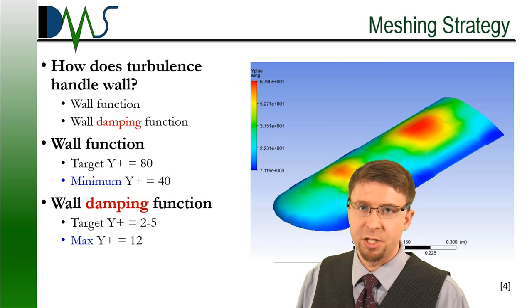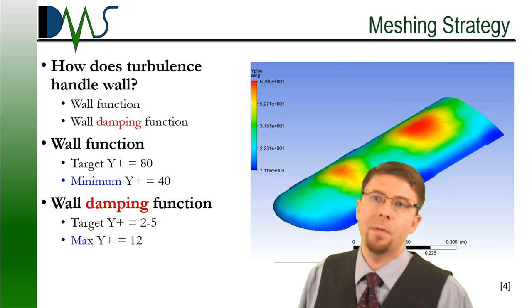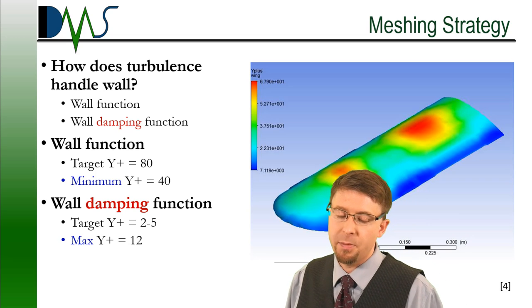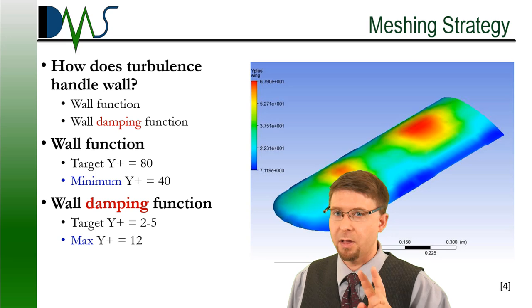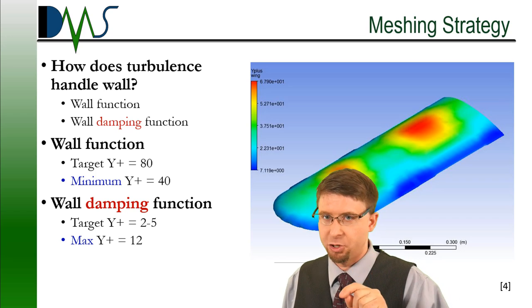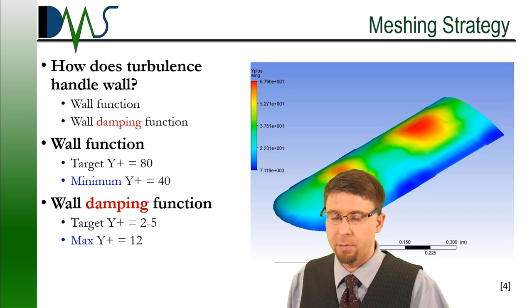So how does this affect our meshing strategy? Well, how does the turbulent model handle the wall? They can typically give you two options depending on your solver. You can either have a wall function or a wall damping function. Those are two very different options.